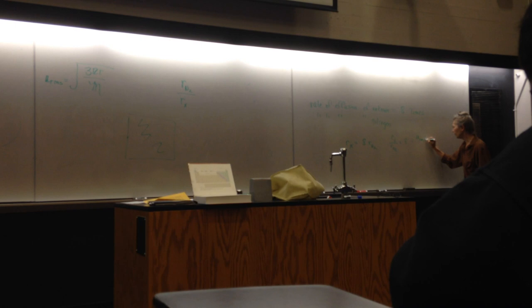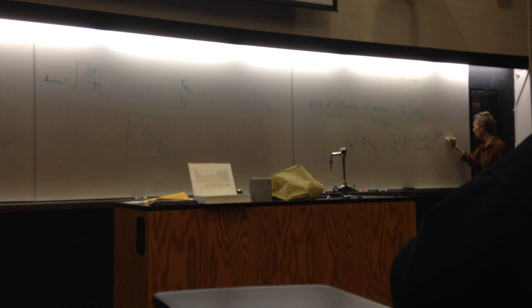So if I turn this into an equation, the rate of X over the rate of N2 is equal to 8. So what's the rate of X? Well, that's just URMS for our unknown divided by URMS for nitrogen. And this is just equal to square root of 3RT over the molar mass of our unknown divided by the square root of 3RT over the molar mass of N2. And, like we often see in ratios, a lot of things cancel out.